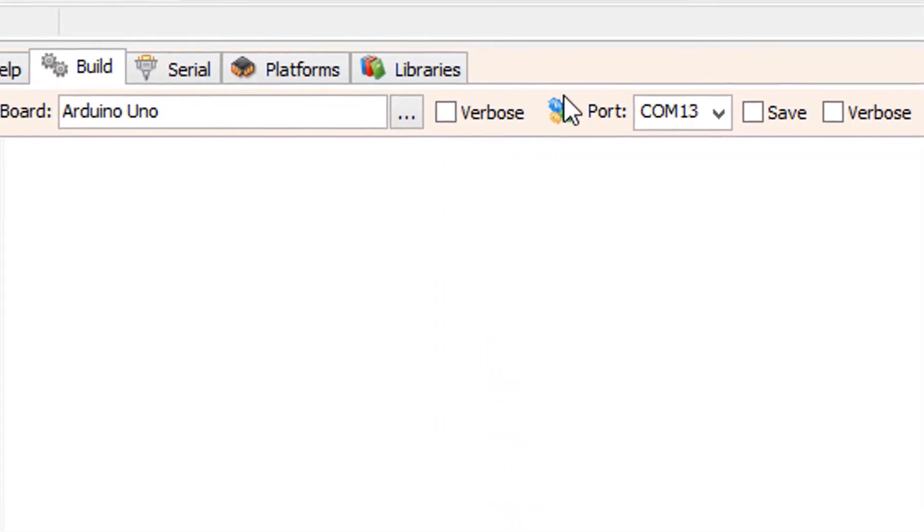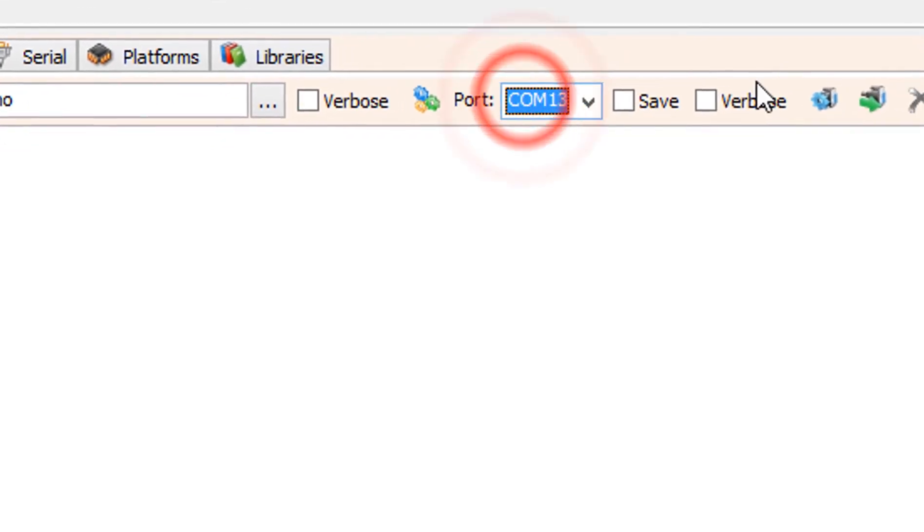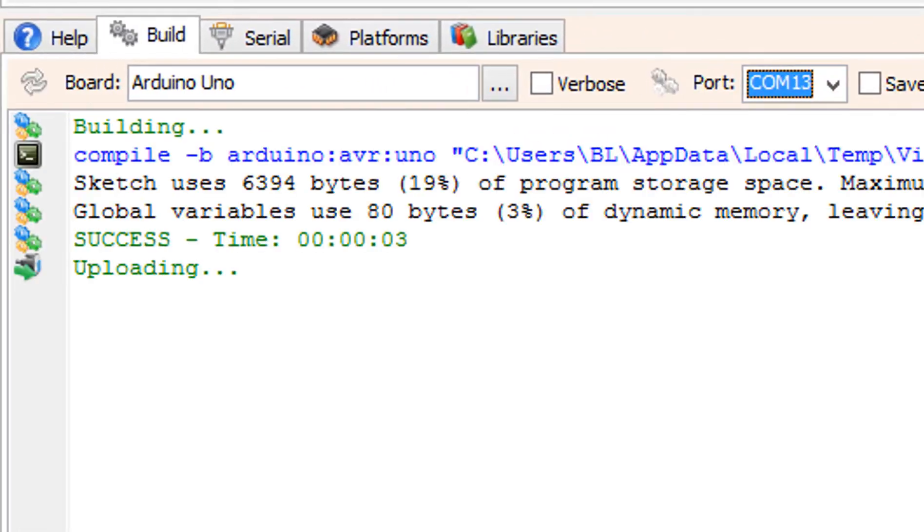On the bottom click on the build tab. Make sure you selected the right board and port and click on the compile build and upload button.